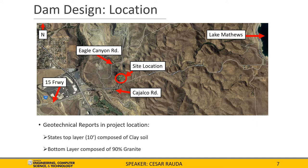Moving on to the dam location, as previously mentioned, we'll be constructing the project in Corona, California. Specifically, our site location will be in the southwest corner of the Cahalco Canyon Creek, just west of Lake Matthews and just east of the 15 Freeway, and south of Riverside County. Reading into geotechnical reports performed in locations near the project site, we were able to determine that the first 10 feet of the ground soil is composed of clay, with the bottom layer being composed of 90% gneiss, which will make our foundation for the project.